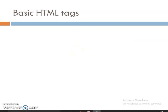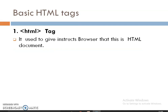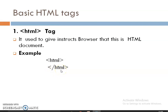Now we will look at HTML tags. Our first basic tag is the HTML tag. It is used to give instruction to the browser that you are opening a document in HTML form. It starts with the HTML tag and ends with the closing slash HTML tag. It is not a mandatory tag — it is optional. If you do not write the HTML tag, then by default it will be considered.